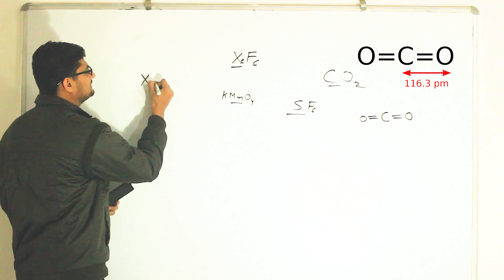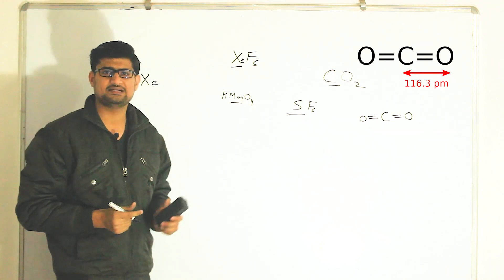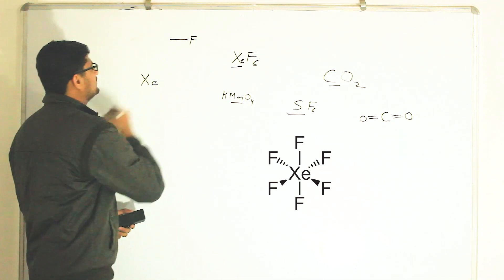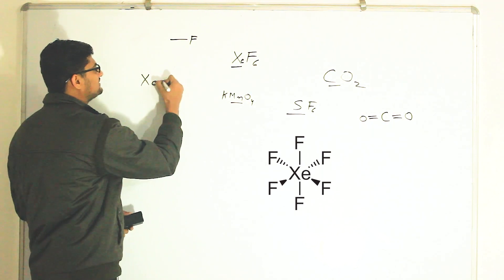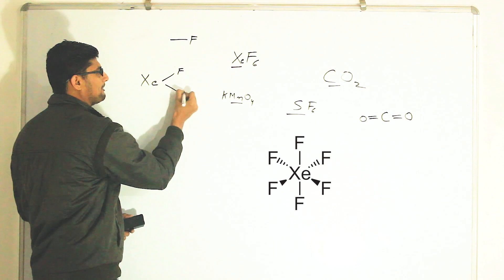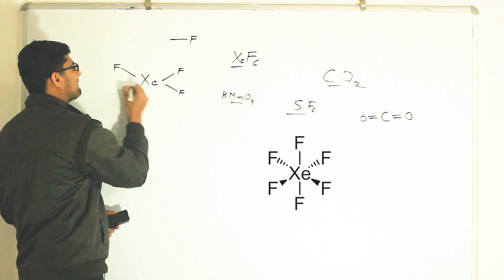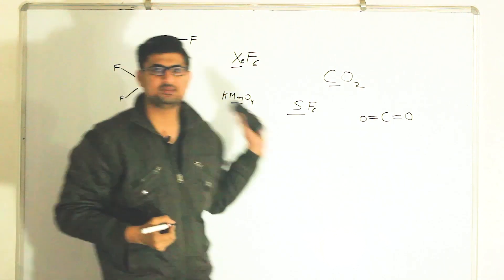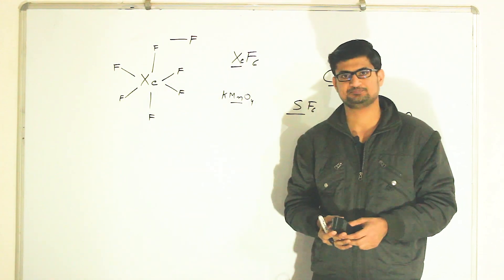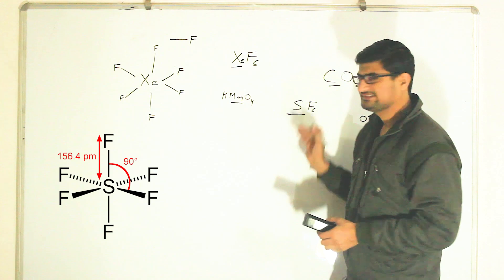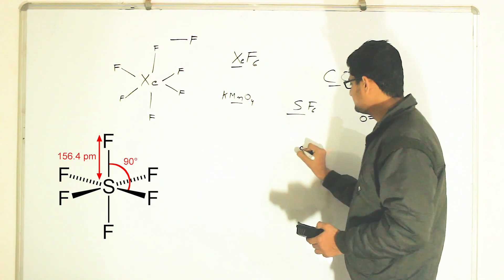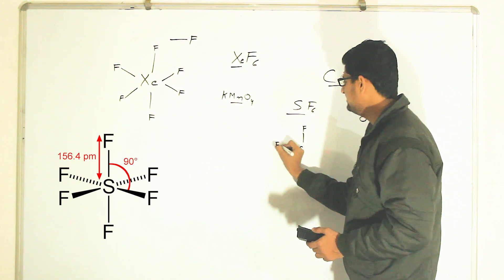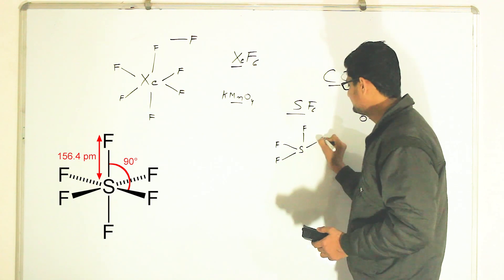For XeF6, xenon is going to be the central atom, while each fluorine needs to make one single bond, so all six fluorines will surround the xenon atom. For SF6, sulfur is going to be the central atom, and six fluorines are going to make six single bonds.